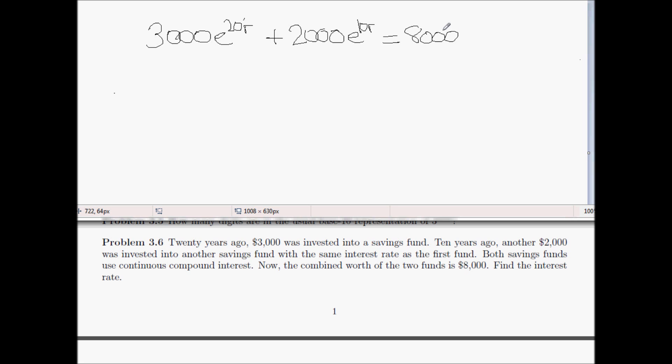That certainly looks like a fairly hairy expression, but it's actually something that can be solved exactly. If we let x be equal to e to the 10r, then that gives me that 3,000x squared plus 2,000x minus 8,000 is equal to 0.